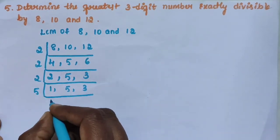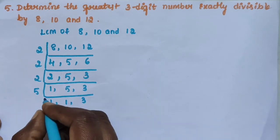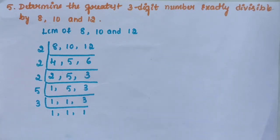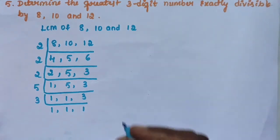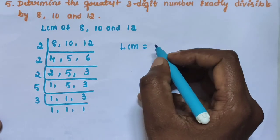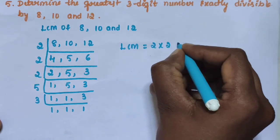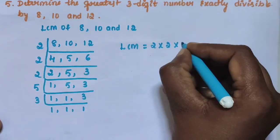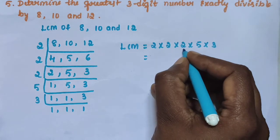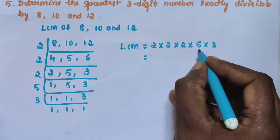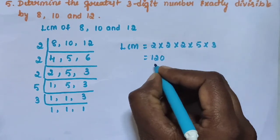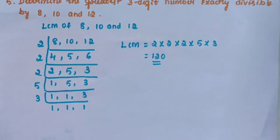Next you take 5: 1 five, 5 ones are 5, 3 as it is. Next you take 3: 3 ones are 3. Then LCM of 8, 10 and 12 is 2 × 2 × 2 × 5 × 3. 2 twos are 4, 4 twos are 8, 8 fives are 40, 40 threes are 120. Then LCM of 8, 10 and 12 is 120.